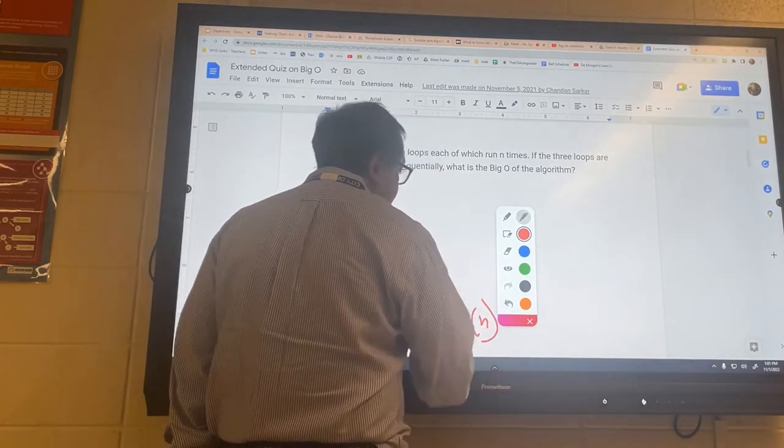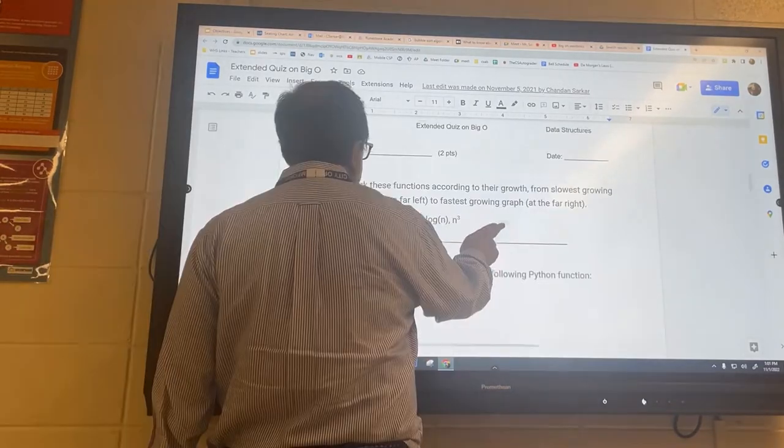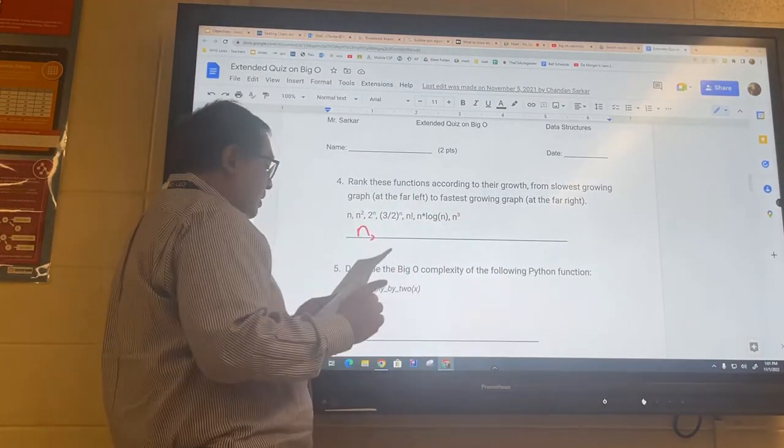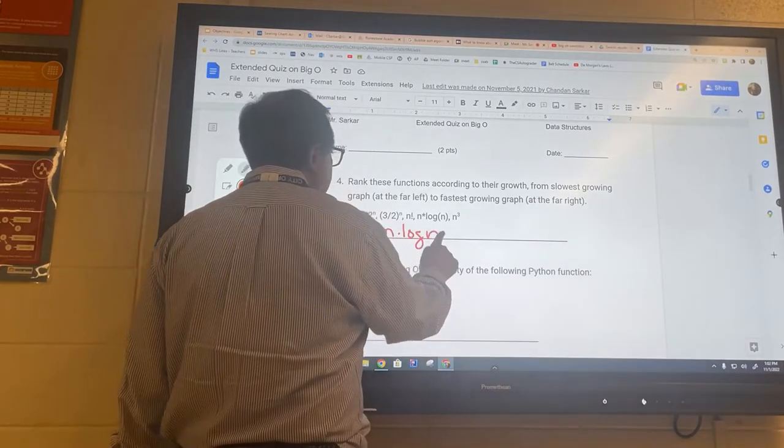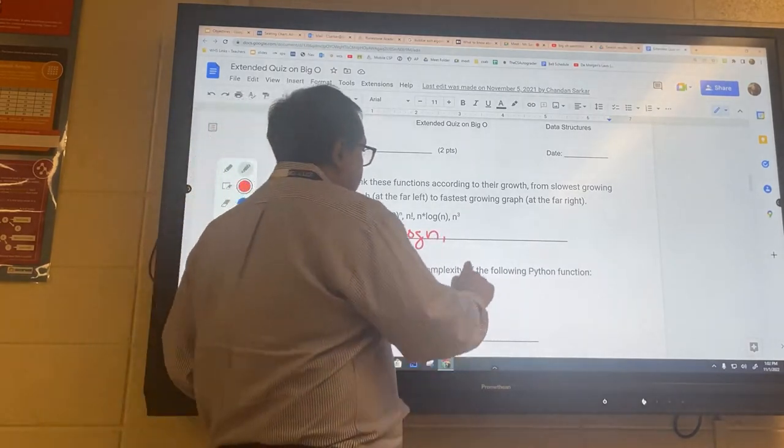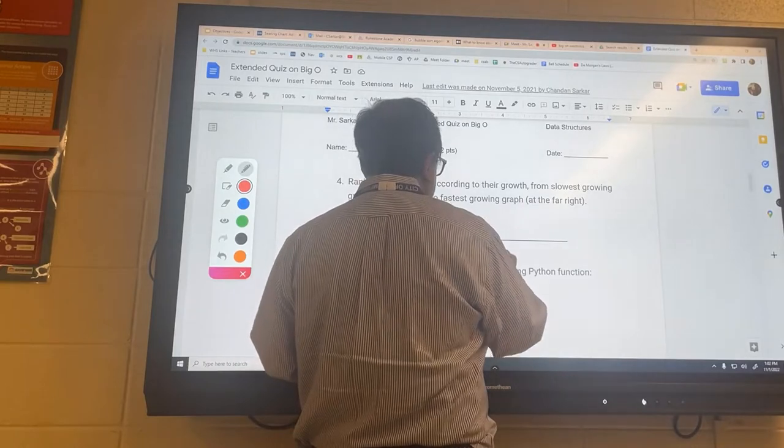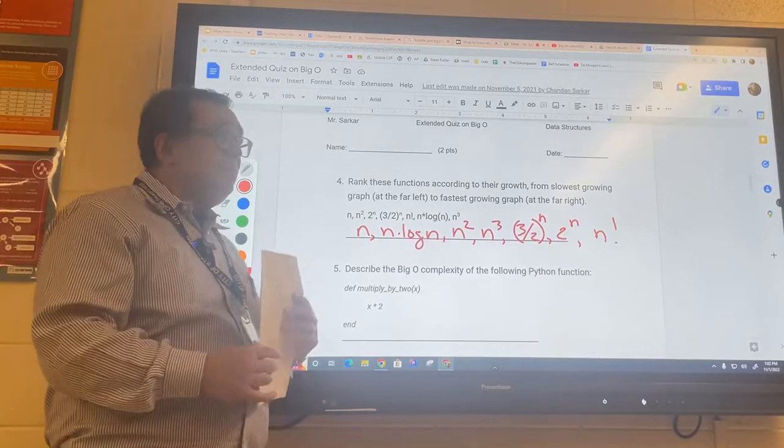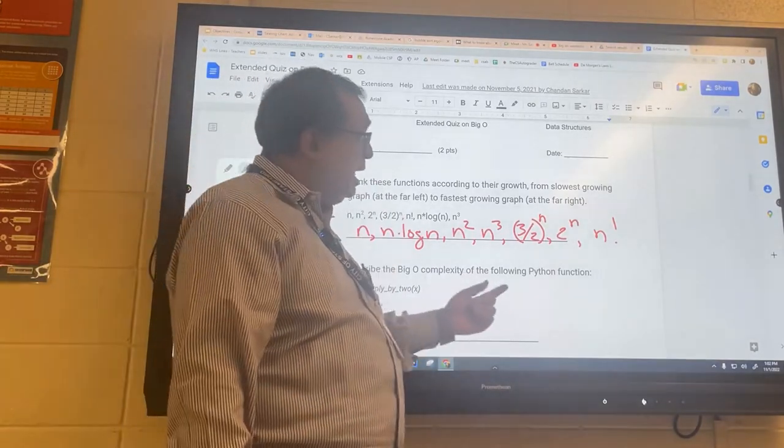We want to order these. And then what will be the next one after that? n log n, right. And then what do you have after that, sir? n squared. Okay, n cubed. Yeah, okay. For some reason, sometimes students have a mental block and think that this is rising at a more rapid rate than this.